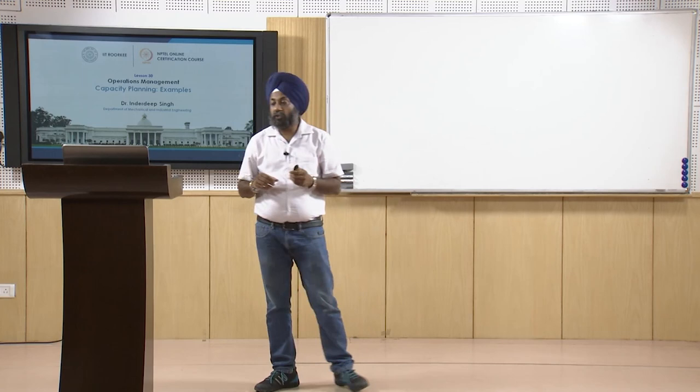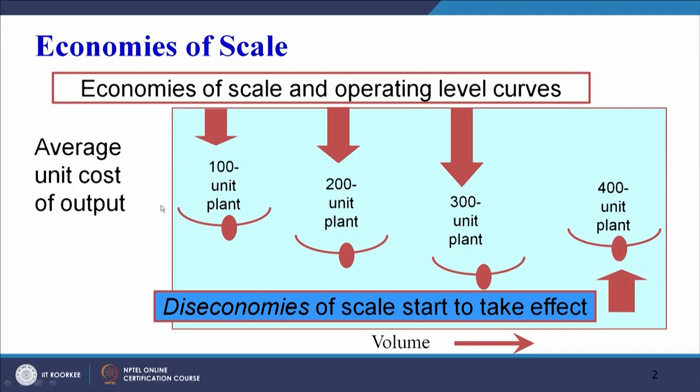We will try to get an overview of the best operating level with the help of a diagram. From the graph you can see the average unit cost for a one hundred, two hundred, three hundred, and four hundred unit plant. Beyond the three hundred unit plant, the average unit cost starts to increase - so the minimum average unit cost is achieved at the three hundred unit plant.